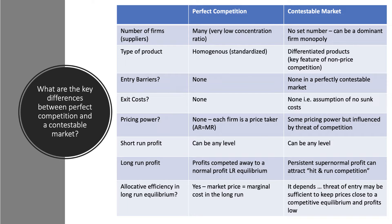Profits in the short term can be at any level in any market structure. So in both short-term perfect competition and short-term contestable markets, profits can be any level — it depends on the level of demand, market prices, and short-term costs. In perfect competition, supernormal profits — abnormal profits — are competed away to a normal profit long-run equilibrium. The entry of new firms competes profits down to normal profit.